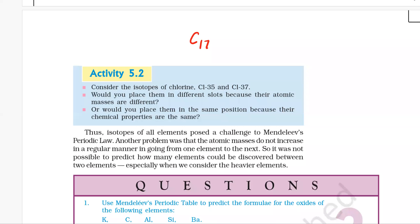Chlorine, whose atomic number is 17, has two isotopes: Cl-35 and Cl-37. The next limitation of Mendeleev's periodic table was that if we place these isotopes on the basis of their atomic mass, there are two different atomic masses.